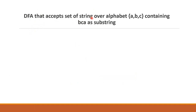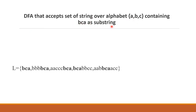The problem is: design a DFA that accepts a set of strings over the alphabet {A, B, C} containing BCA as a substring. The first step is to understand the language. The minimum string in this language is BCA. We consider combinations starting with B, and endings, as well as A and C combinations in the middle such as AAB and ACC.